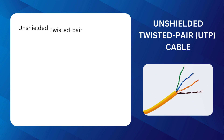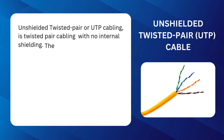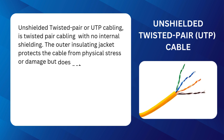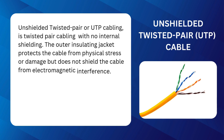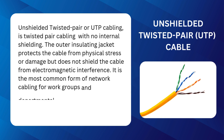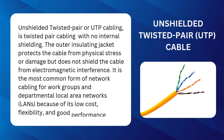Unshielded Twisted Pair Cable: Unshielded Twisted Pair cabling, UTP, is the most common form of network cabling for workgroups and departmental local area networks, LANs, because of its low cost, flexibility, and good performance.